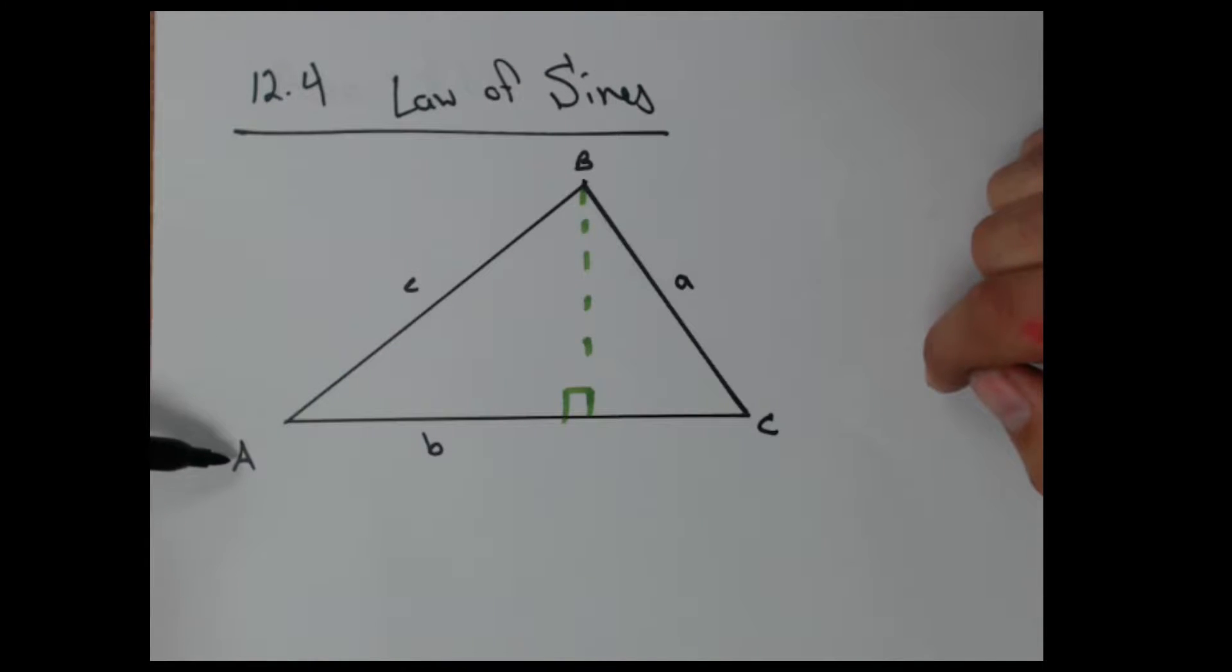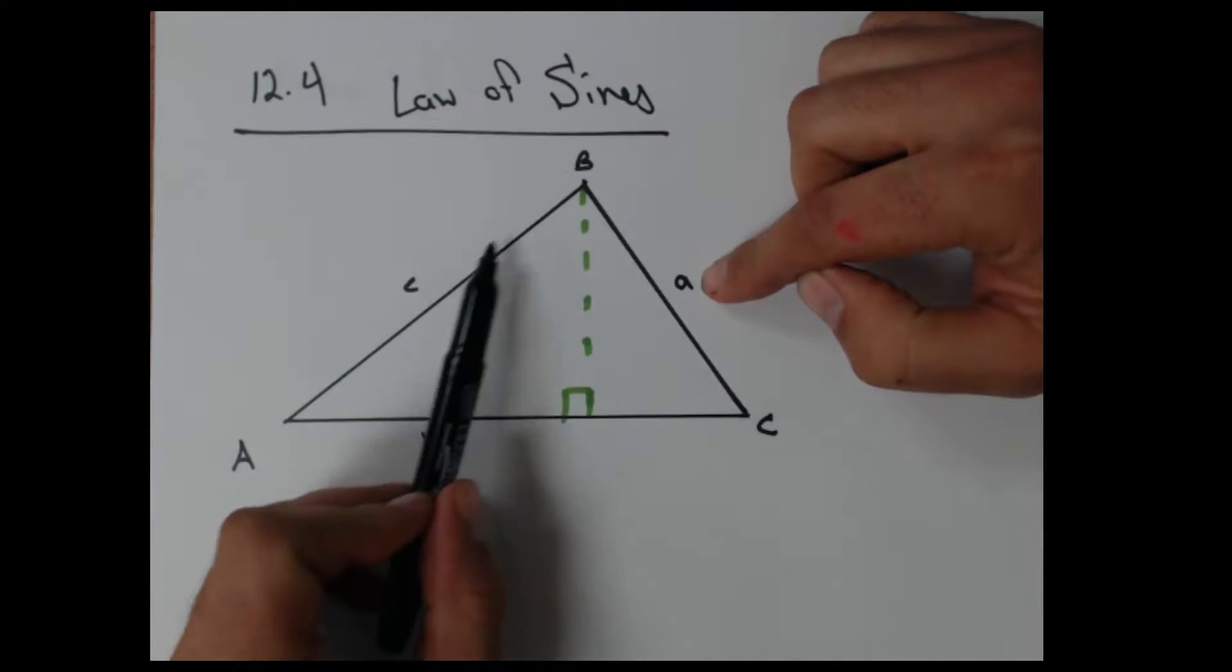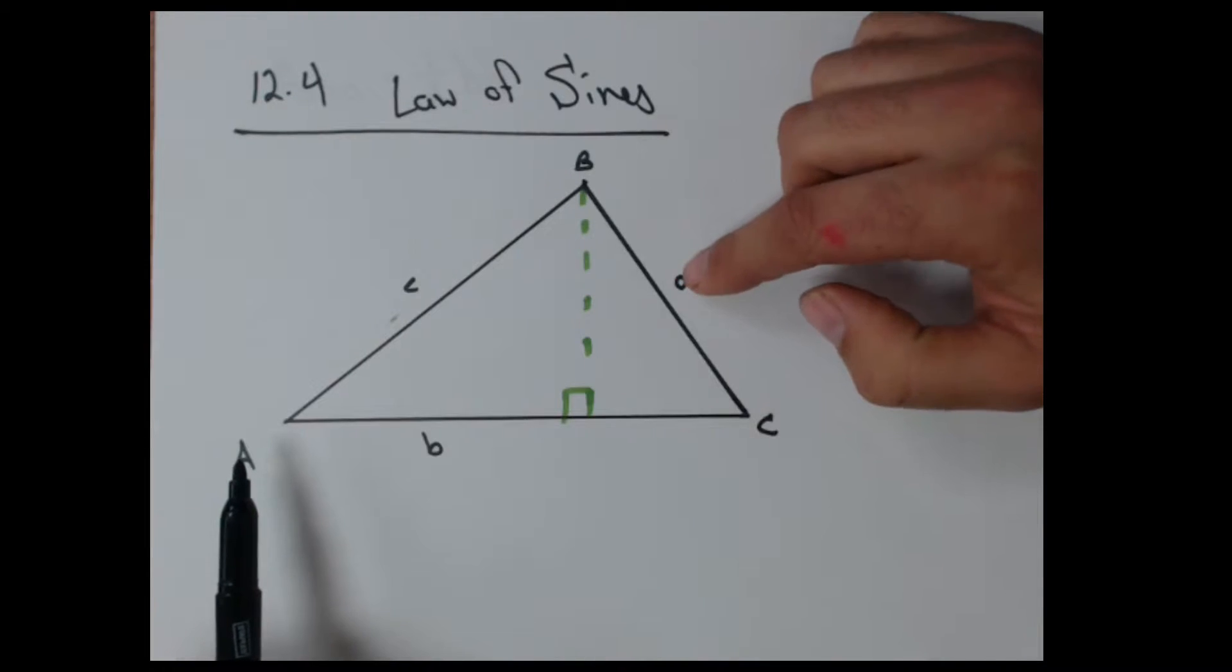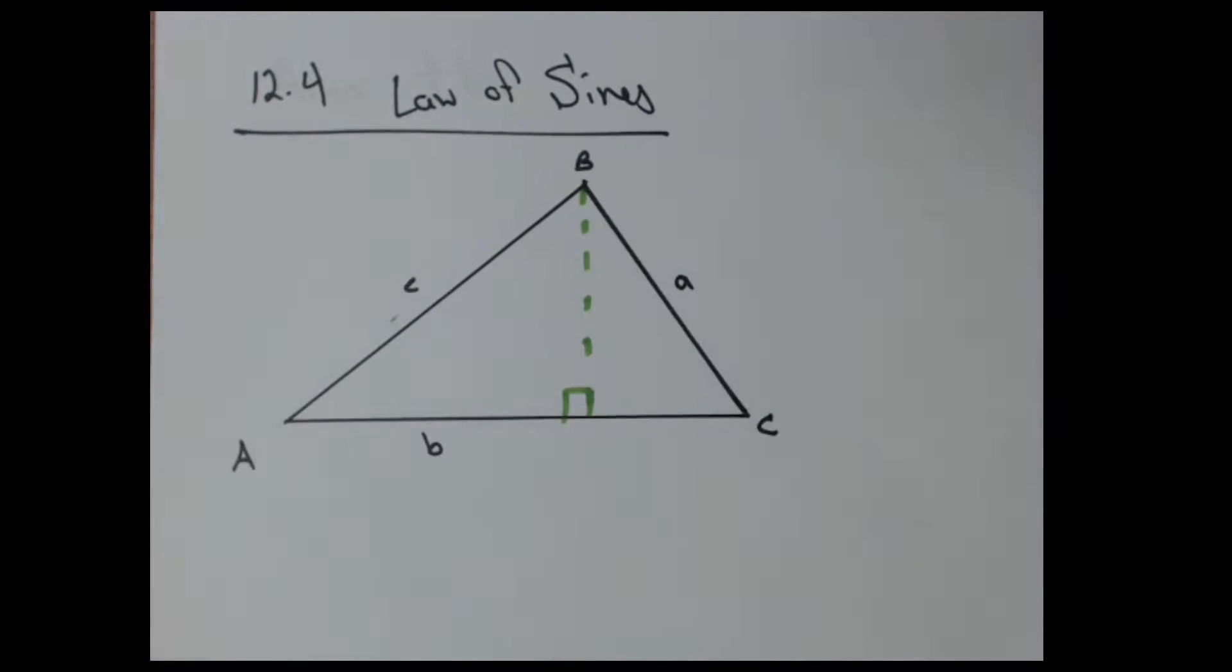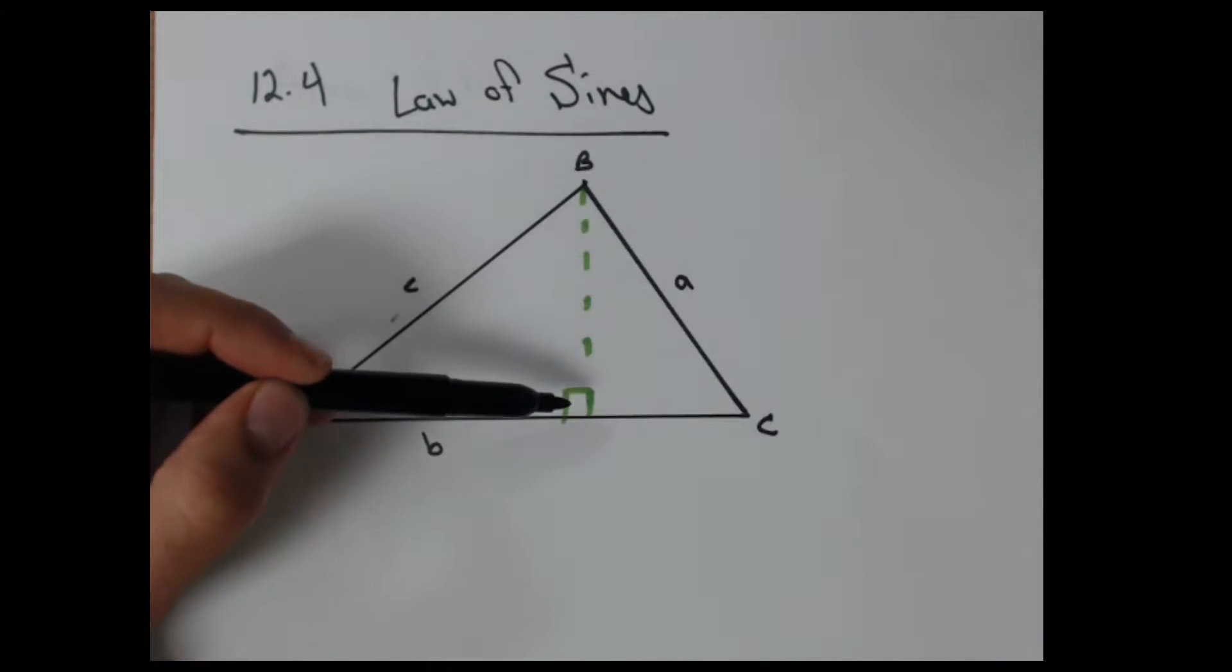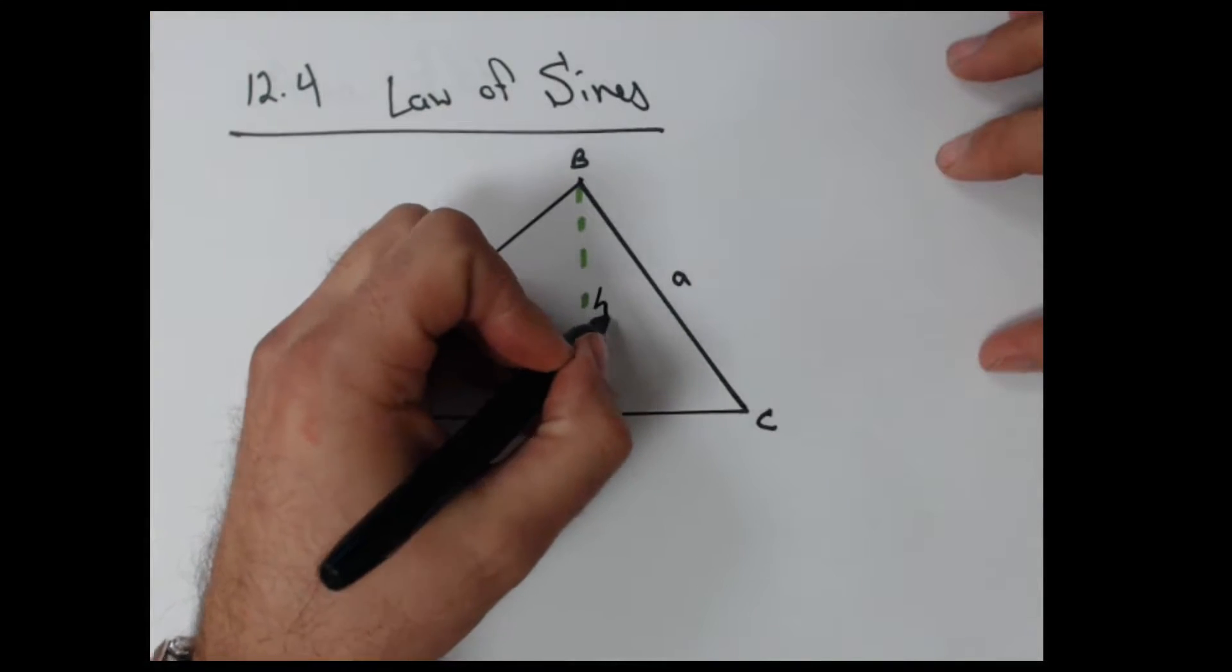And I have A, B, and C capital letters as my angles. And I have lowercase letters A, B, and C for the side lengths associated. So side C, opposite of angle C. Angle A, opposite side A. And this green line right here, that is a perpendicular line to this bottom chunk here. So that represents my height of my triangle.